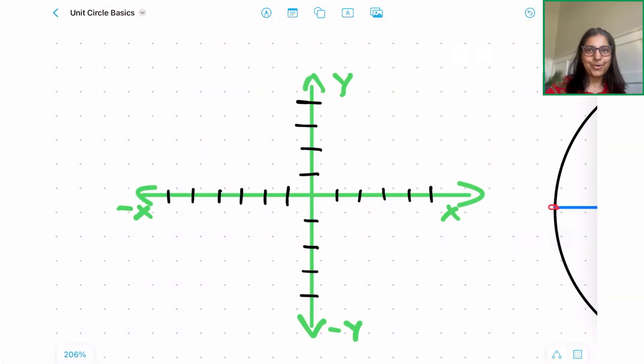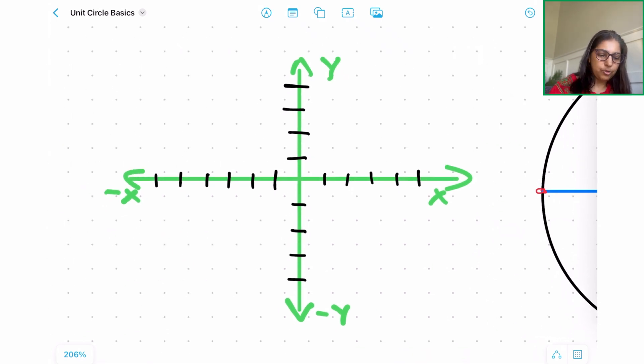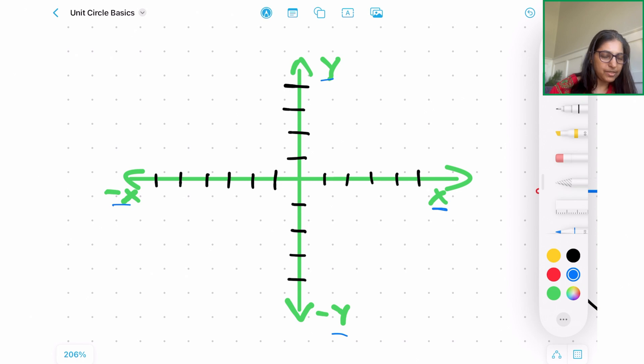All right, let's go ahead and get started. As you can see on the screen, I have a coordinate plane already written out so we can reference it. Here is a positive x-axis, minus x, plus y, minus y. Before we start understanding the unit circles, let's understand how this applies to each of the quadrants. The coordinate plane, which is a two-dimensional plane, has four quadrants: quadrant one, two, three, four.